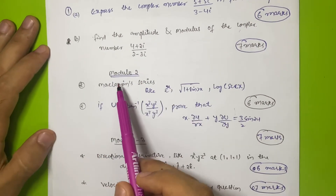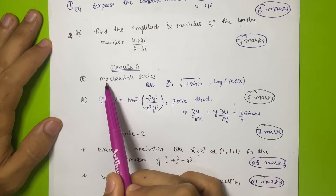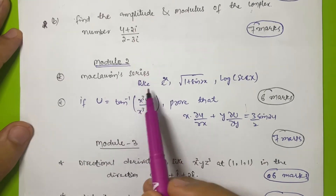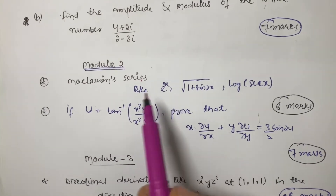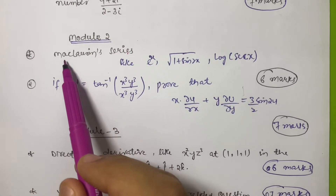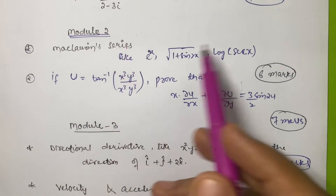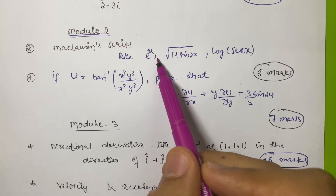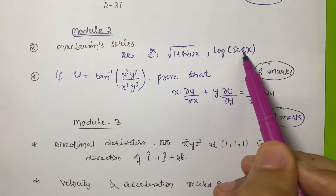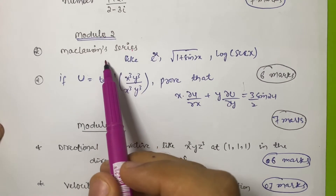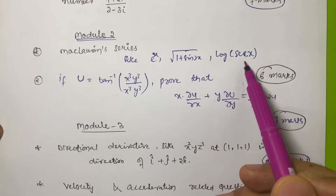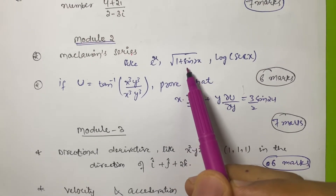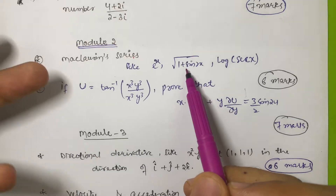In Module 2, one of the most important topics is the Maclaren series. If you refer to past papers you will see this question always appears. The functions may be different - for example: e^x, √(1 + sin(2x)), log(sec x). They will ask you to find the Maclaren series of these functions. There are about six functions to cover, and you may need to know trigonometry formulas to solve them.